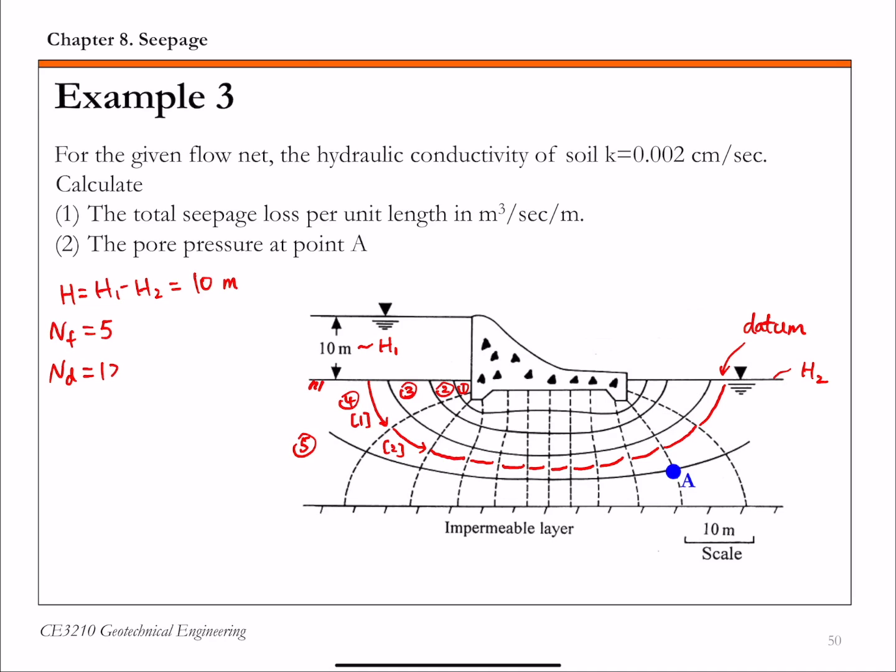And then the potential drops between two adjacent equal potential lines. So that's basically 1 delta H, 1 delta H. So this delta H is capital H. That's the total loss from upstream to downstream over ND.